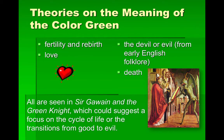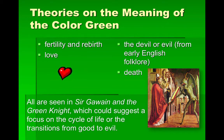Theories on the meaning of the color green: every color has certain characteristics associated with it. Green is associated with fertility and rebirth, and also love. In early English folklore, green was also associated with evil or the devil, and could also indicate death. If you look at the picture on the bottom right of your screen, the demon depicted is a green color, which often indicated something bad.